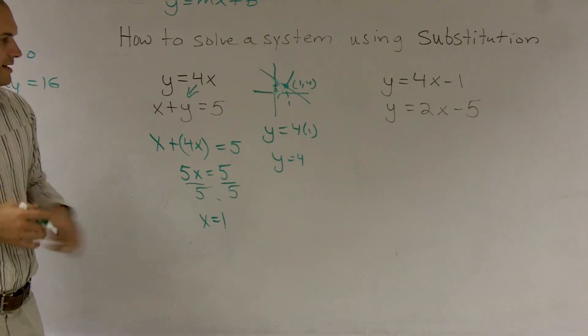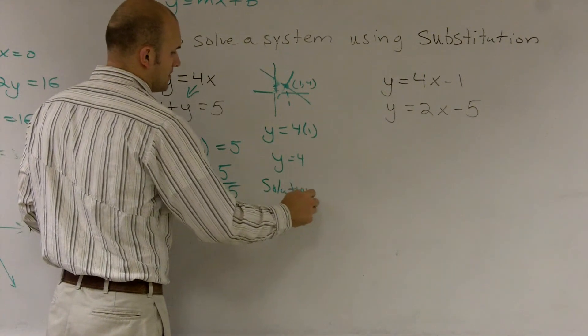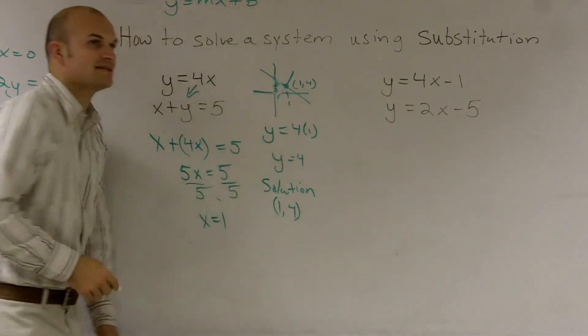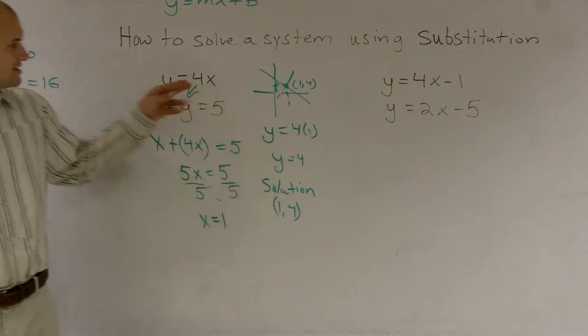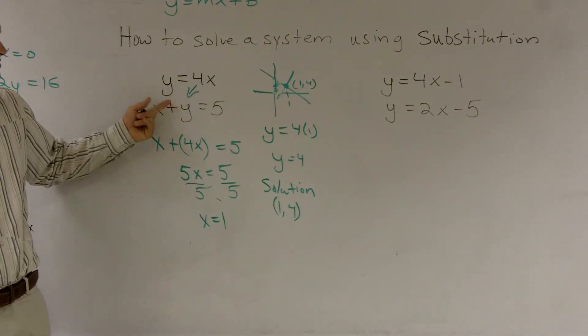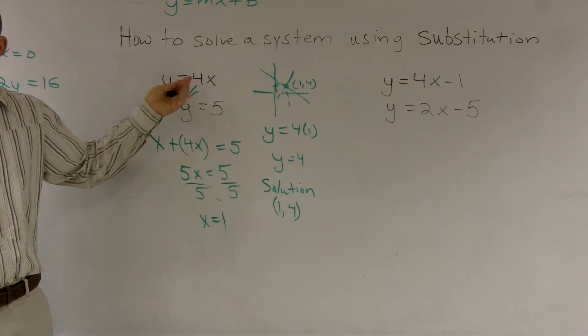Now, the next thing we need to look at is the solution is going to be one, four. And what that means is at the point one, four, one, four satisfies this equation, and it satisfies this equation, which if you check it, that's right. If you put a one in for x and a four in for y, you get four equals four, which is true.